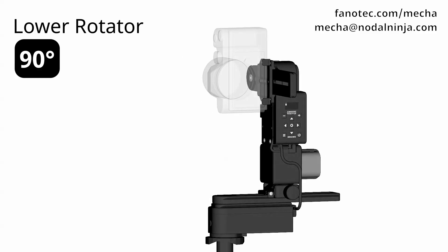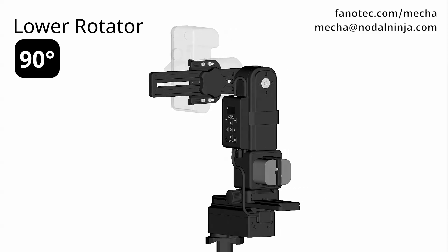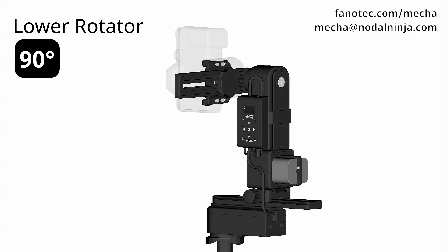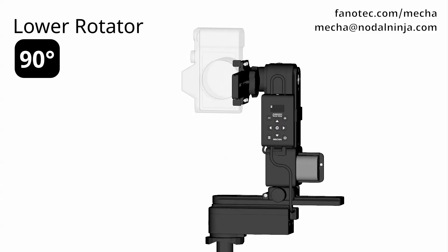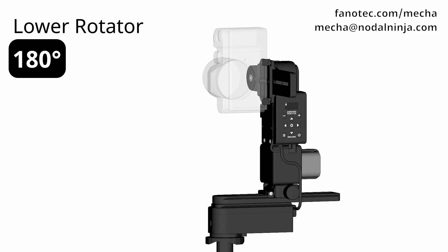Similarly, for 180 degree rotations, use the left arrow button and the menu button. For 90 degree rotations, press the left arrow button, then quickly press the plus button. Press the right arrow button, then quickly press the plus button for the opposite direction. For the opposite direction of 180 degrees, use the right arrow button and the menu button.